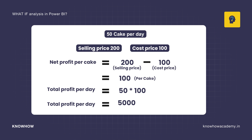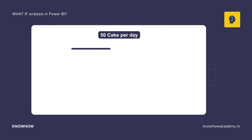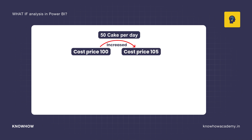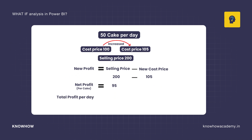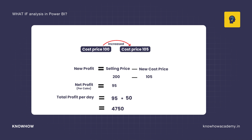You are getting Rs. 5,000 profit per day by selling 50 cakes at Rs. 200. What if the cost price of cake is increased by Rs. 5? The new cost price would be Rs. 105, and you are still selling a cake at Rs. 200. So your new profit is Rs. 200 minus Rs. 105, that is Rs. 95. Your total profit per day is Rs. 95 into 50, that is Rs. 4,750.